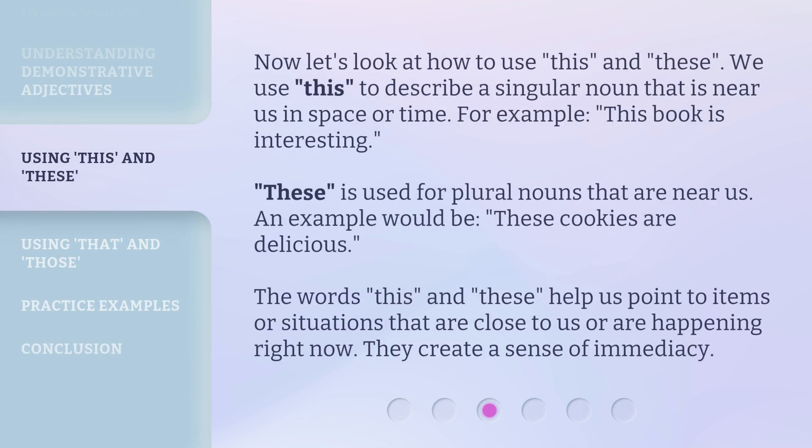Now, let's look at how to use 'this' and 'these'. We use 'this' to describe a singular noun that is near us in space or time. For example, 'this book is interesting.' 'These' is used for plural nouns that are near us. An example would be, 'these cookies are delicious.' The words 'this' and 'these' help us point to items or situations that are close to us or are happening right now. They create a sense of immediacy.